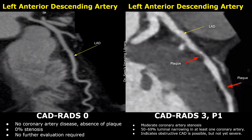Let's look at another case of CADRADS 3. In this image, a low-density plaque is present in the LAD. The narrowing seems to be more than 50%, falling between 50% and 69%, so it will be graded as CADRADS 3. The stenosis in the middle segment seems to be around 50%, but since the stenosis in the proximal segment is greater, the maximum stenosis falls between 50% and 69%, giving a score of CADRADS 3.